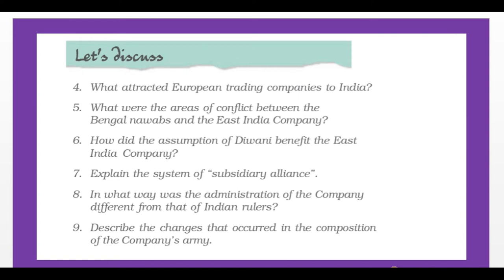Question and answers section. What attracted European trading companies to India? What were the areas of conflict between the Bengal Nawabs and East India Company? How did the assumption of Diwani benefit East India Company? Explain the system of subsidiary alliance. In what way was the administration of the company different from that of Indian rulers? Describe the changes that occurred in the composition of the company's army. Take your pen and get ready to write the answers.